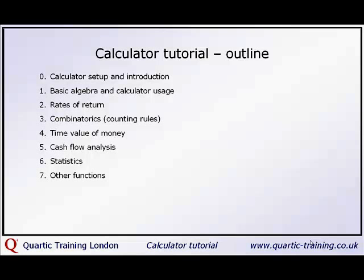In section six, we look at statistics, the buttons above number seven and eight. We look at how we identify means, standard deviations and weighted averages. And finally, in section seven, we look at other aspects of the calculator, including depreciation, breakeven, profit calculations, growth and amortization.